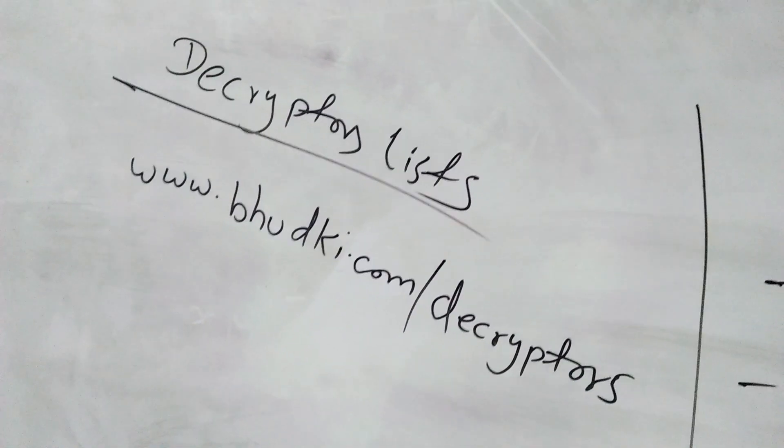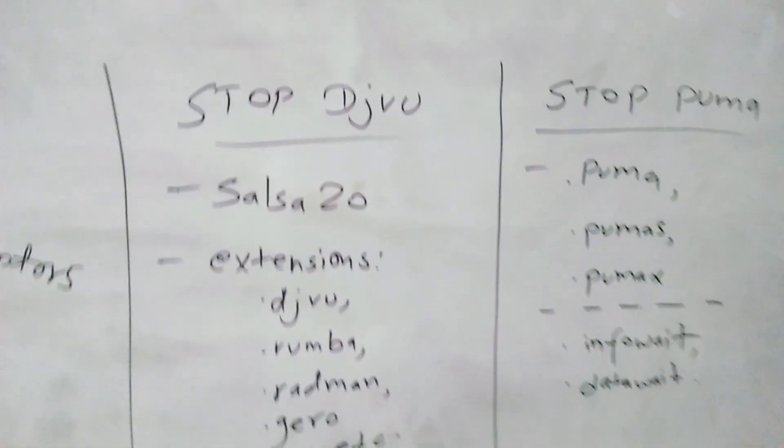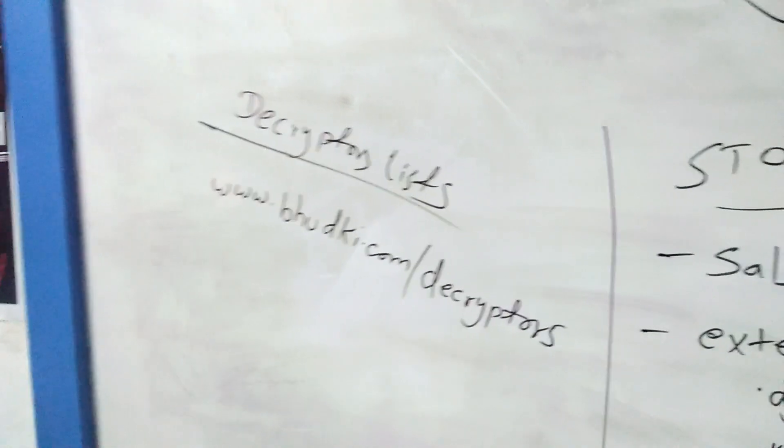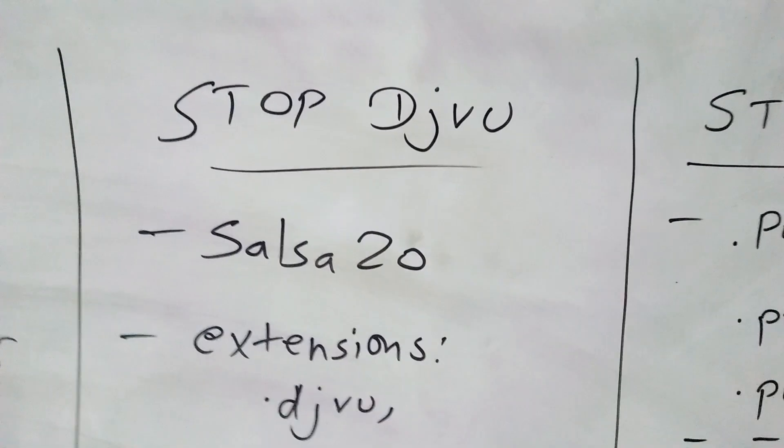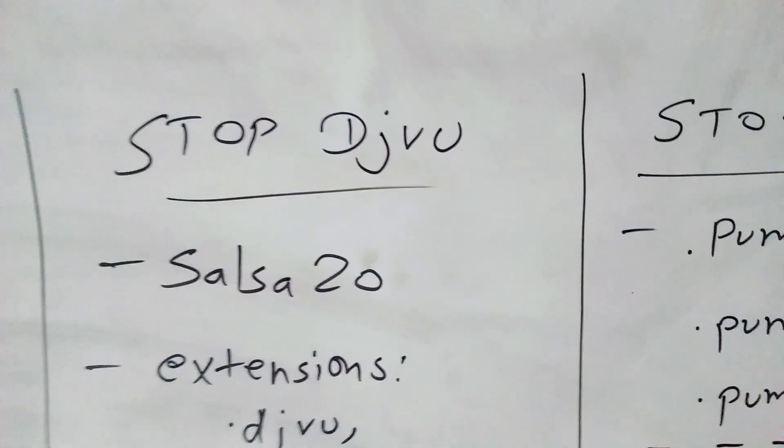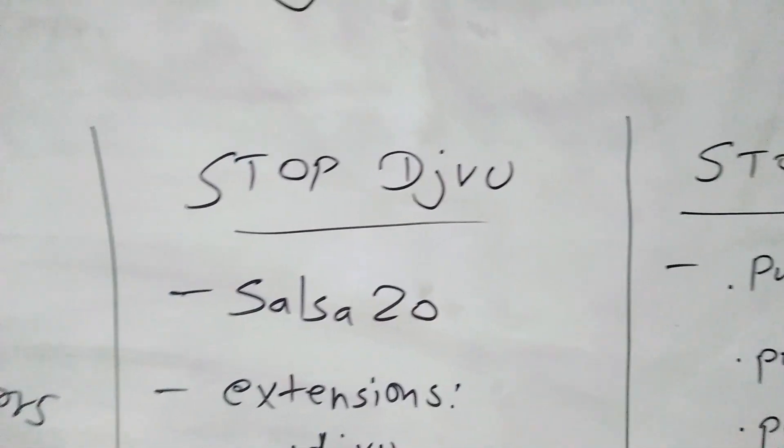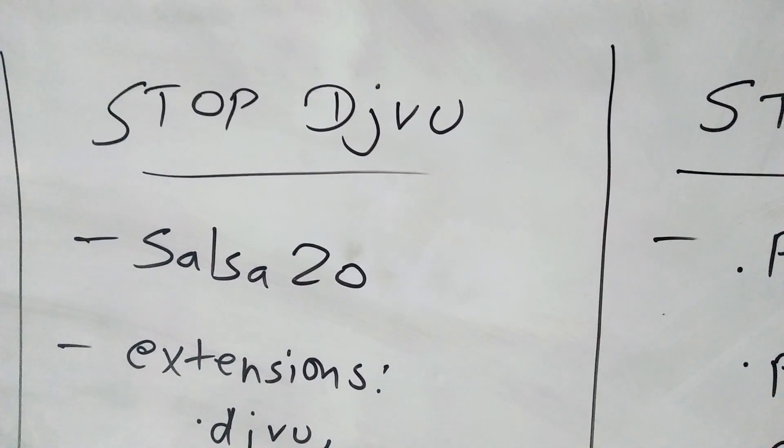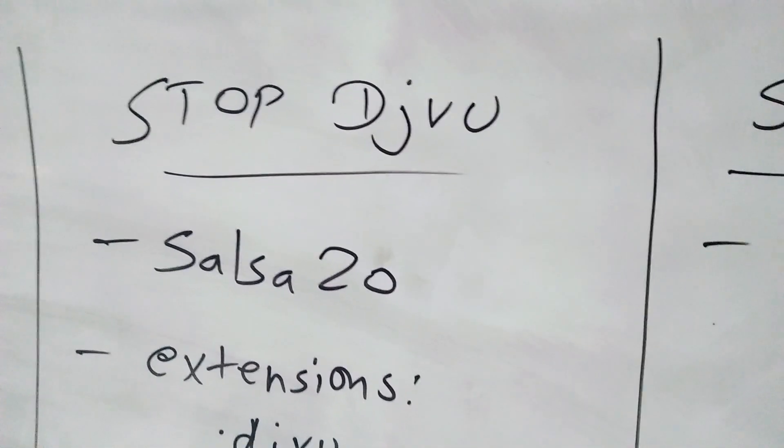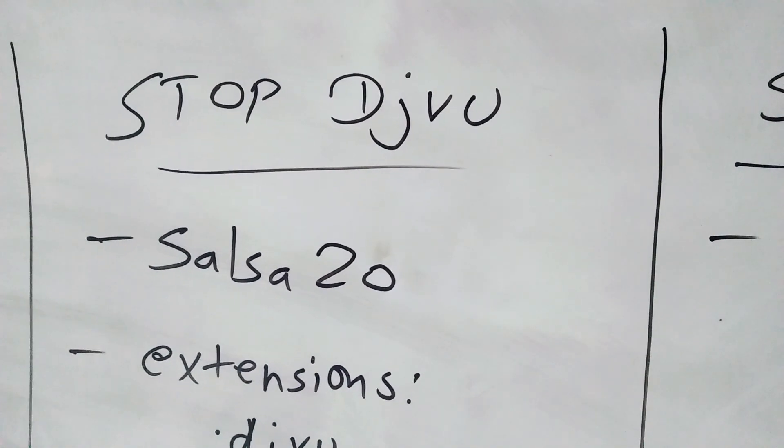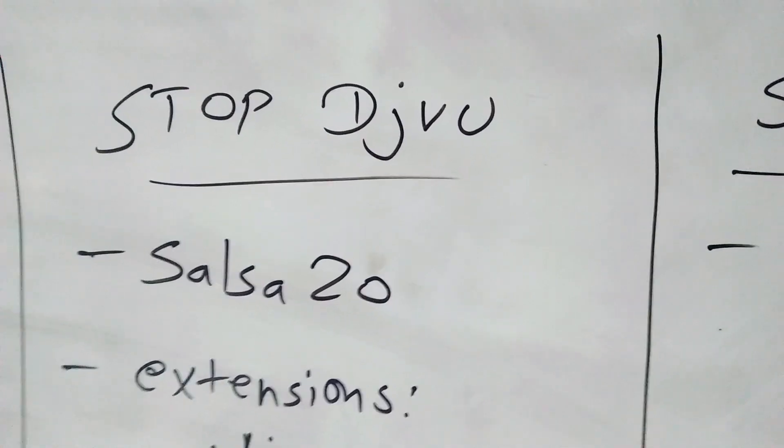You will find this link in the description of this video. There are lots of lists of ransomware decryptors available. Stop Djvu ransomware encrypts victim files with Salsa20 and appends one of dozens of extensions.